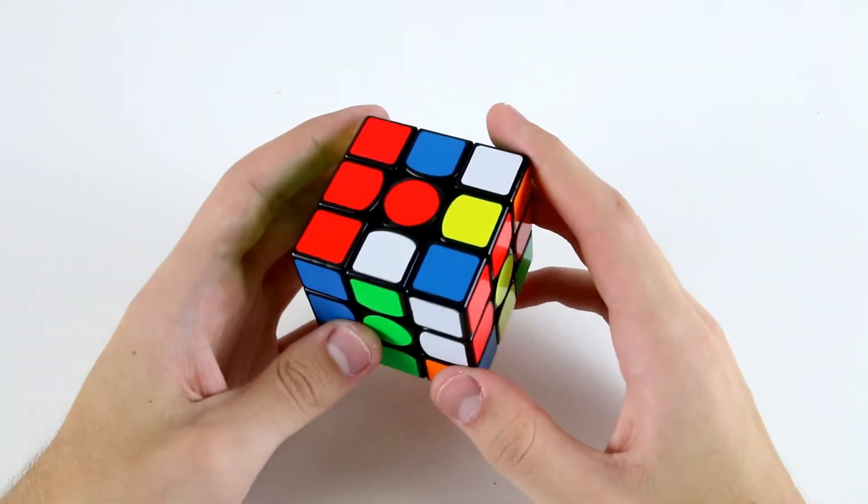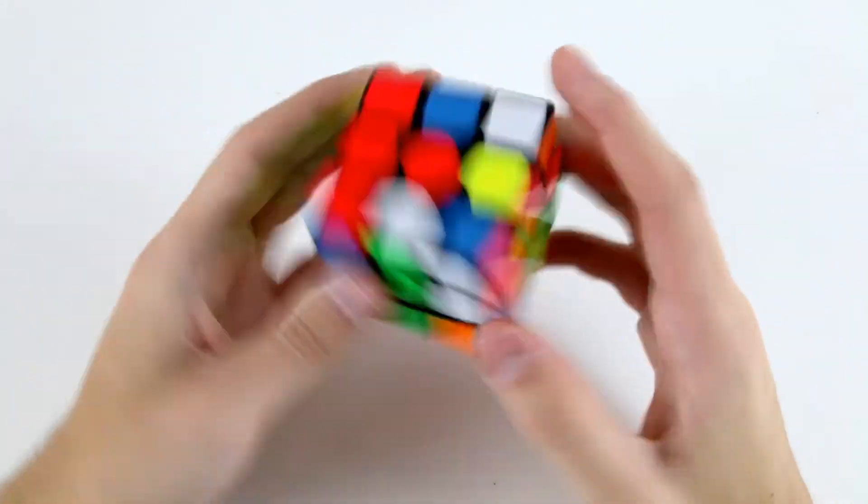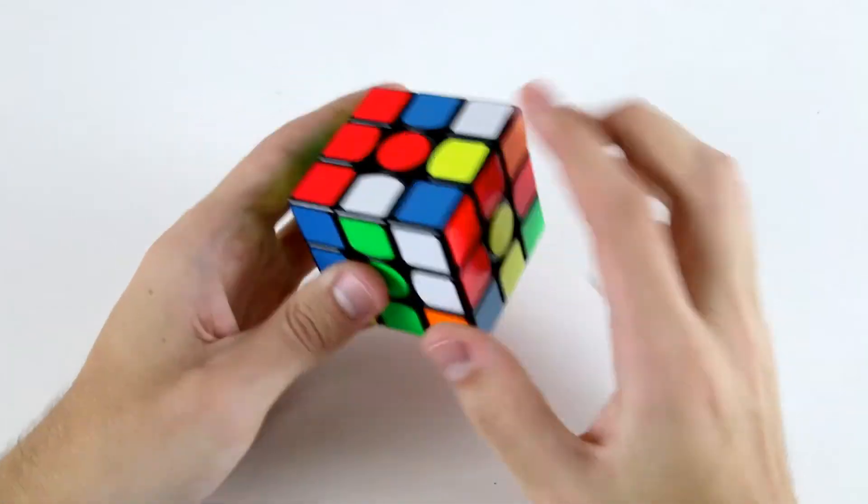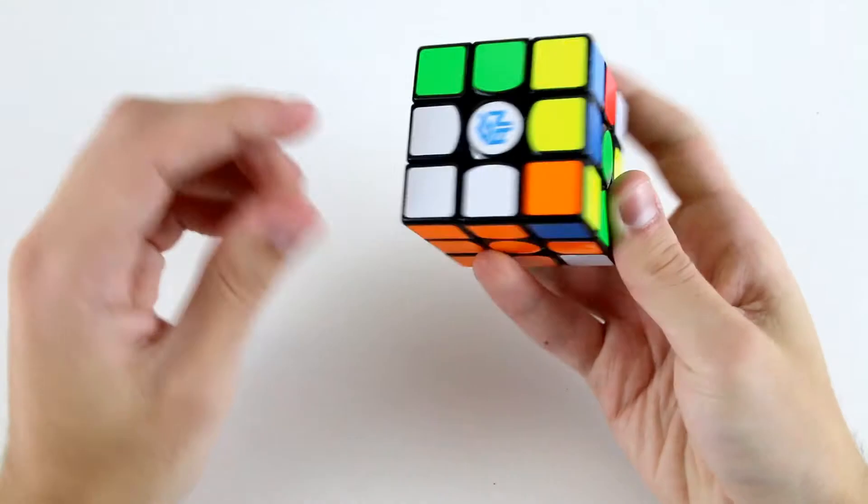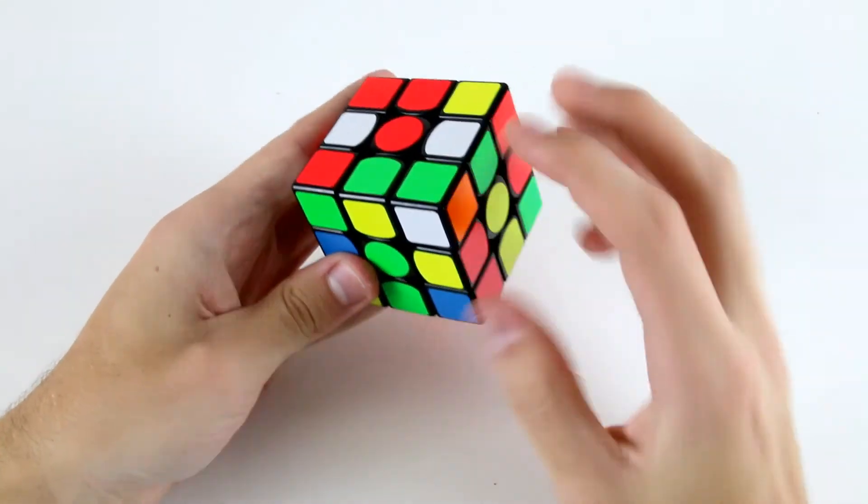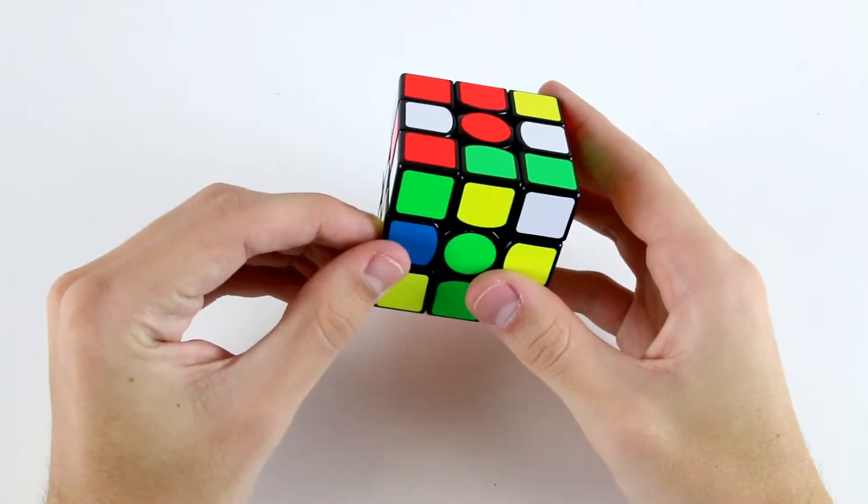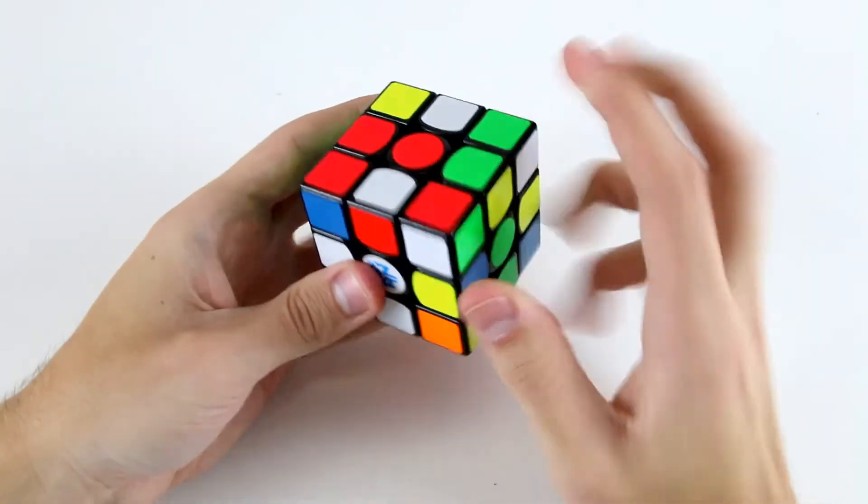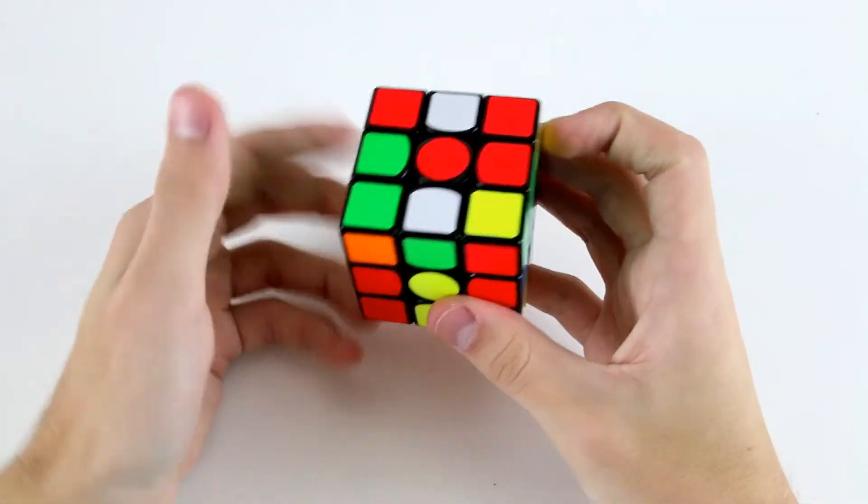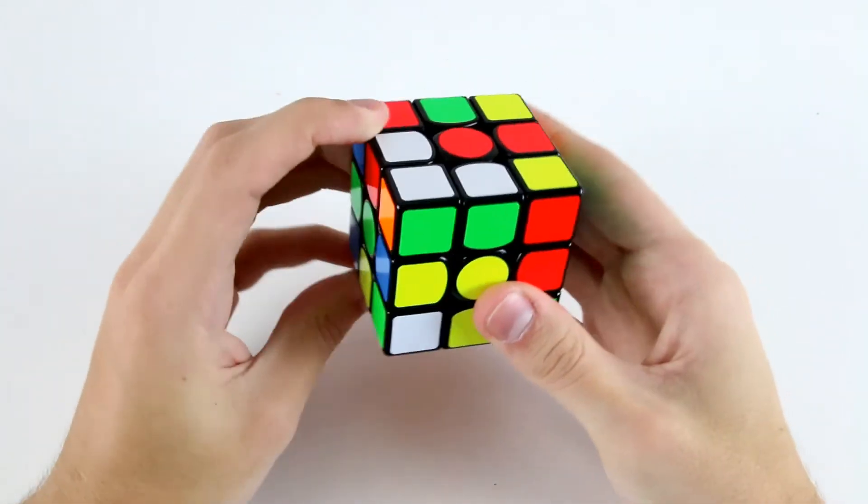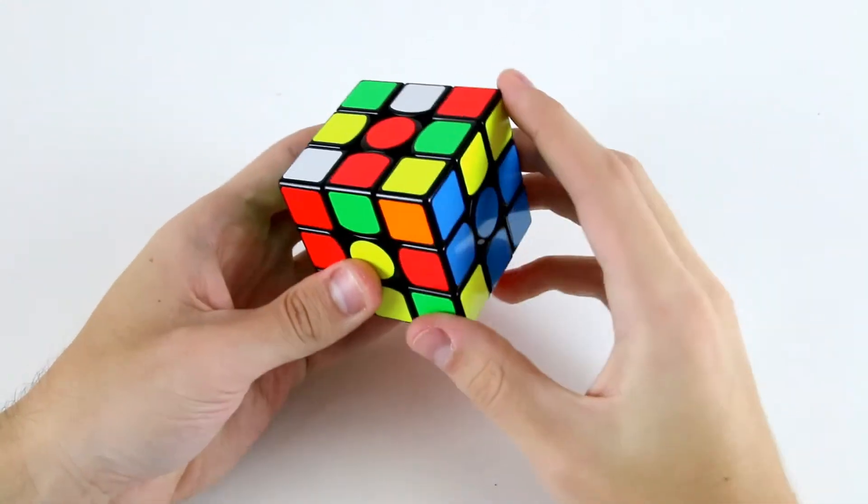So first F2L pair that I see are these two, but that would require a rotation to solve into this slot. I also see this corner and this edge, so what I can do is actually set these up and insert them into the back left there. Then I've got this corner and this edge which I can also insert into this slot. Now I won't rotate this way because if I rotate this way and solve it, then these two front slots will be filled. So I'm going to rotate this way and solve those, and then do these two into this slot next.